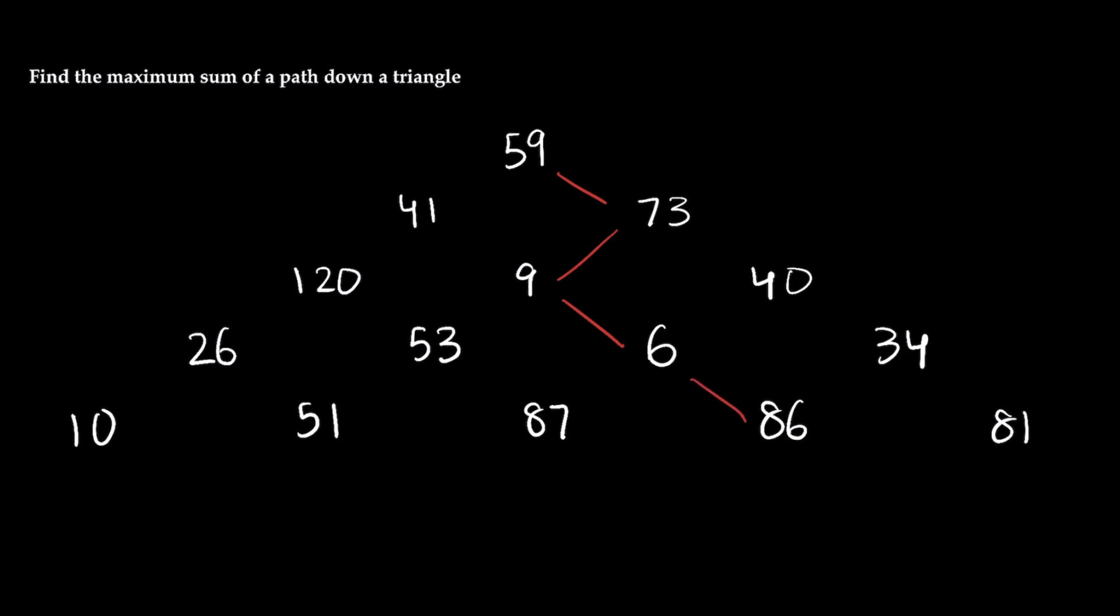And the sum of that path has to be the maximum possible. So a common technique to solve this is to just keep taking the maximum number in each row starting from the root. So for example I can start at 59 and I see that 59's neighbors are going to be 41 and 73 so I'll go down to 73 because that's bigger, and then 73 has 9 and 40 so I'll go to 40 because that's bigger, and then 40 has 6 and 34 and 34 is bigger so I'll go to 34, and then 34 has 86 and 81. Well 86 is bigger so I'll go to 86 and so when I add all this up I'm going to get a sum of 292.